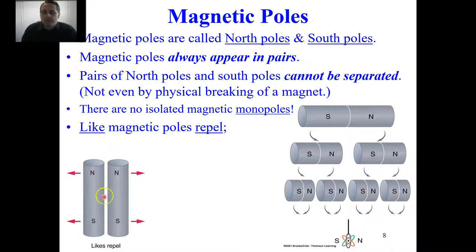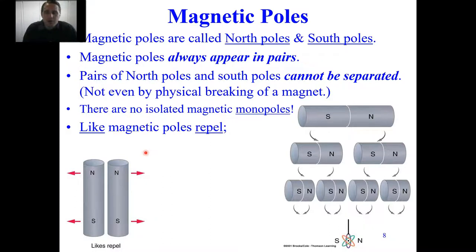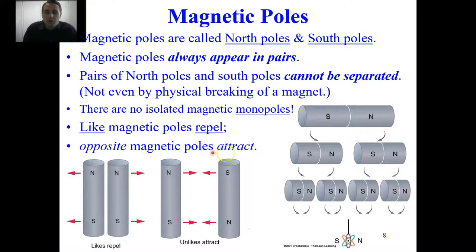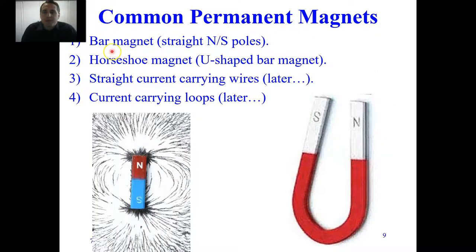If you take two bar magnets and place them near one another, their north poles repel and south poles repel — like poles repel, just as positive and negative charges repel one another — whereas opposite poles attract. North attracts to south and south attracts to north. Common permanent magnet shapes include the bar magnet, which we'll see most this semester. The north end is often colored red and the south end white, blue, or green.